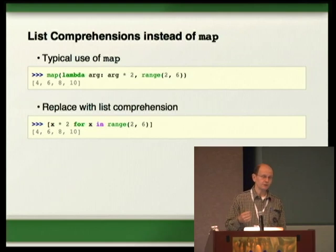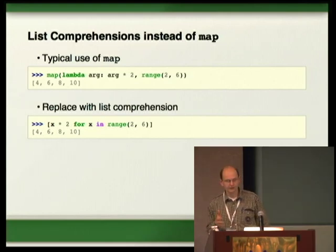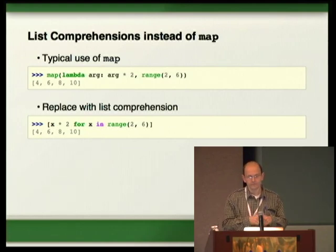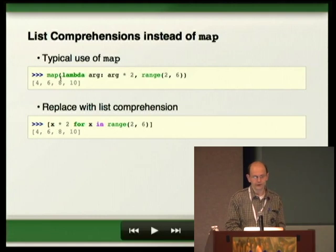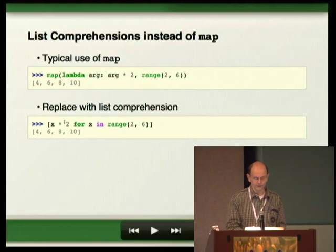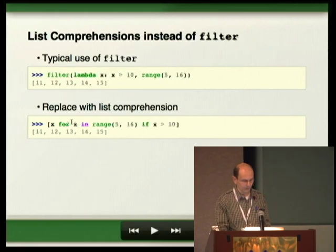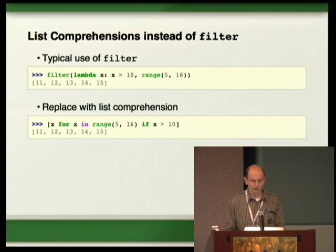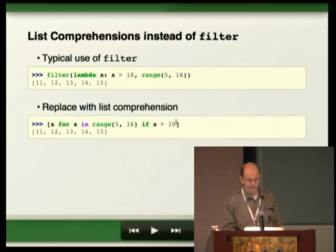List comprehension is a very nice feature — the term actually comes from Haskell. Before, you could use map: apply a function to all elements, like multiplying all elements by two. You can do this with list comprehension much more easily nowadays, and it's usually a bit faster. Filter is still there, but you can use list comprehensions with a condition at the end to filter things out.